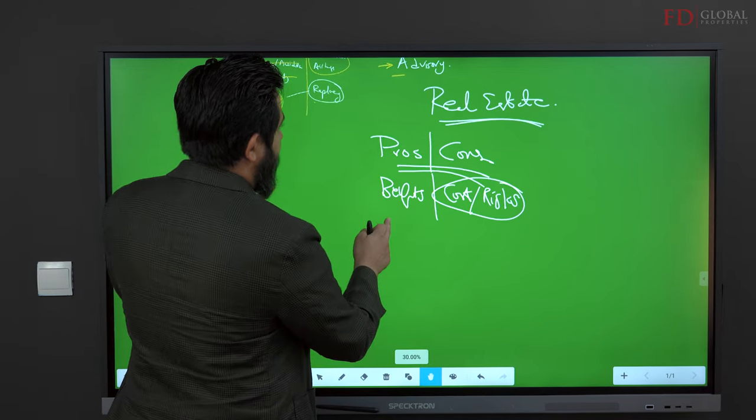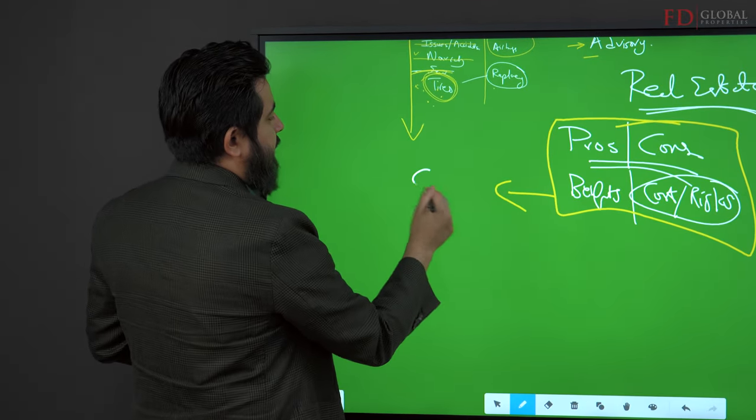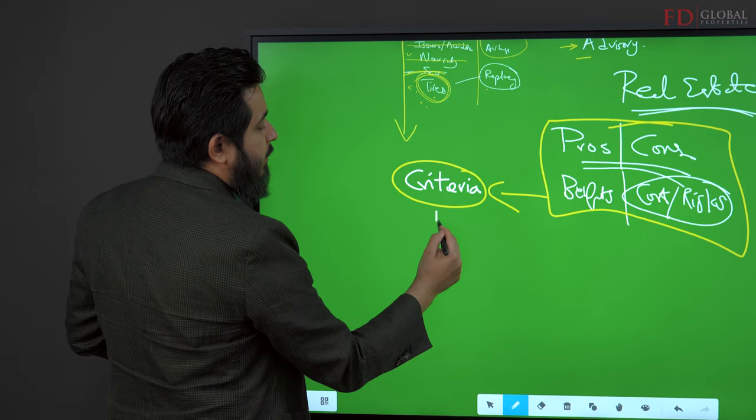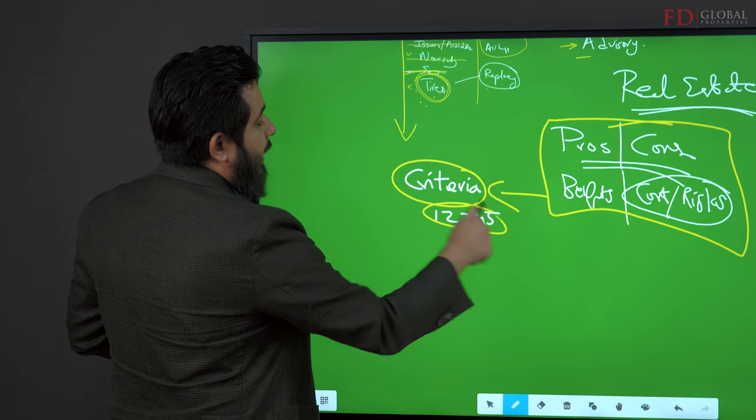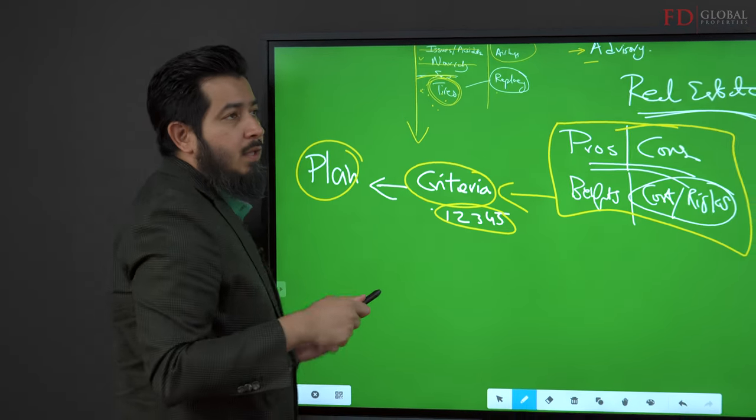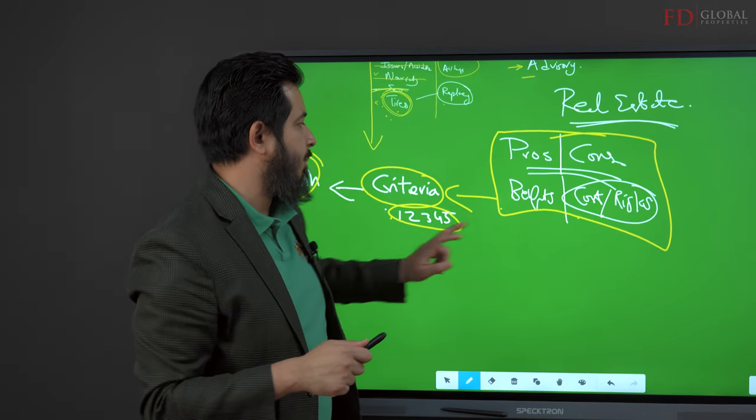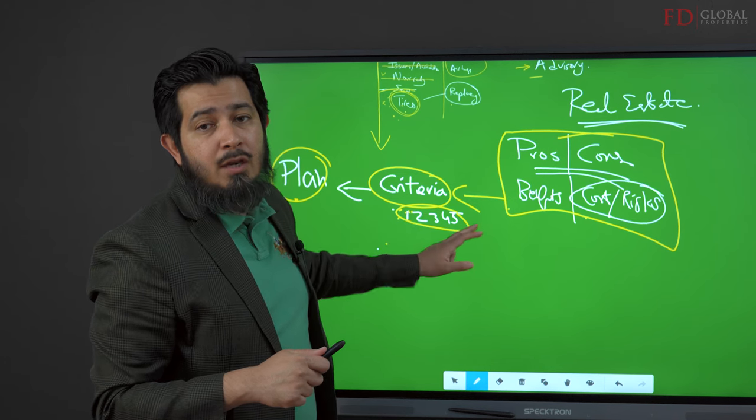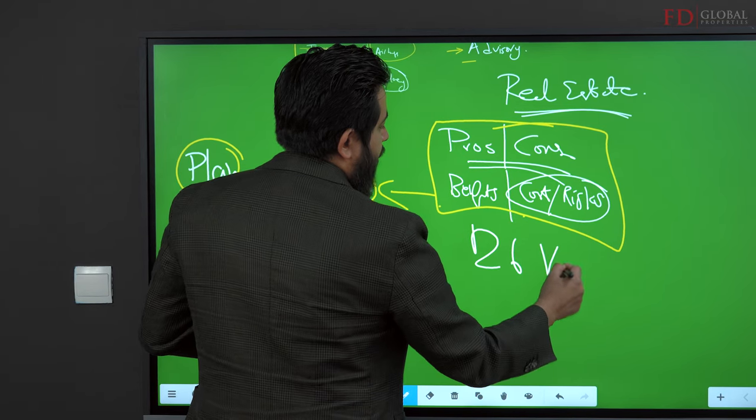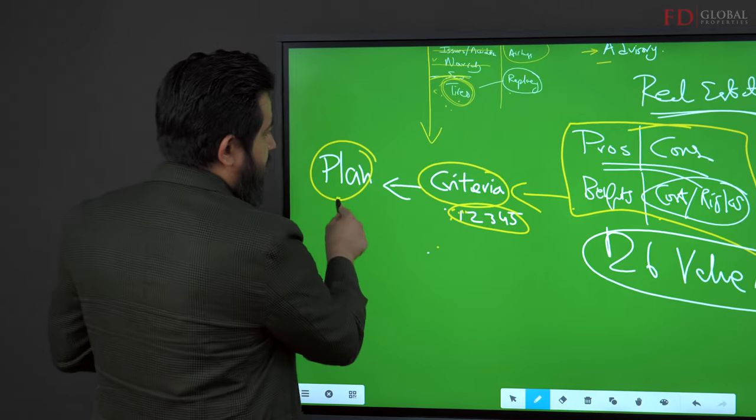Now, when you do this, these pros and cons should be based on the criteria that was established. Now the criteria could be one, two, three, four, five points. And this criteria was actually established in your planning stage. If this plan was well done and your criteria established is good and the pros and cons based on the criteria are good and you do a value analysis, we look at 26 different ways of doing a value analysis. So we look at 26 different angles. If this is good...